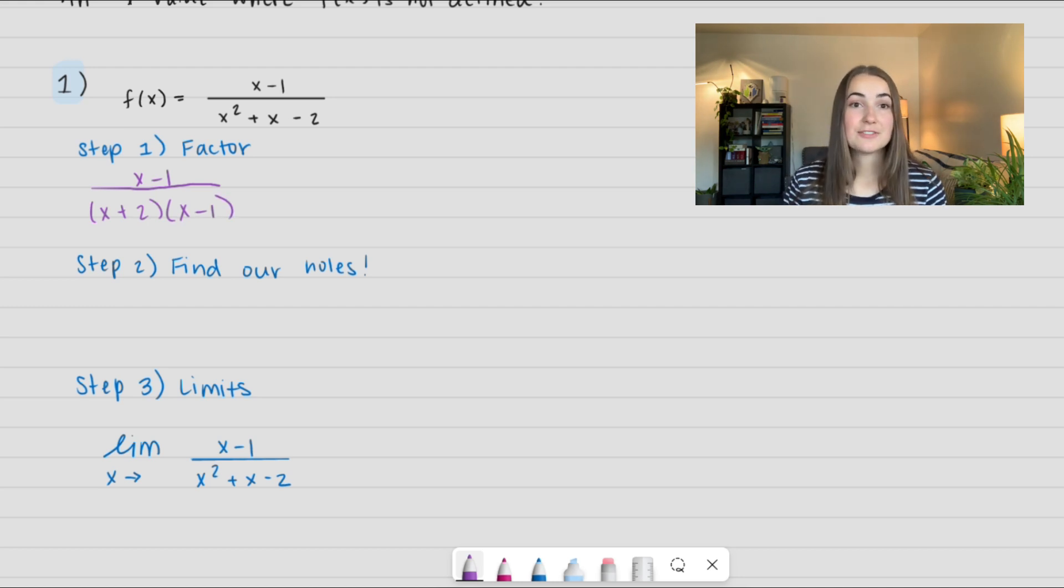Our second step is to find the holes. Those are the x values or terms that divide out. So (x-1) divides out, so I set that equal to 0 and I add 1 to each side. I get x = 1, and that's our hole.